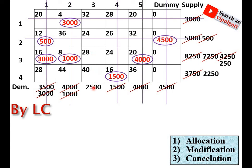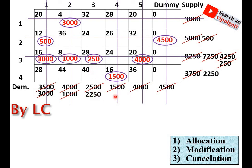Now only a single column remains, so allocation can be made directly. The minimum value from the two remaining cells is 250, so 250 is allocated and supply and demand are modified. The last cell is allocated 2,250 — this final value confirms the whole procedure is correct, as supply and demand both match.